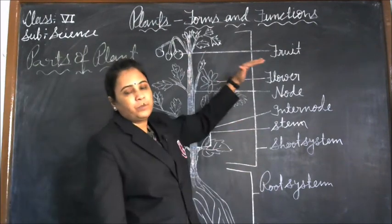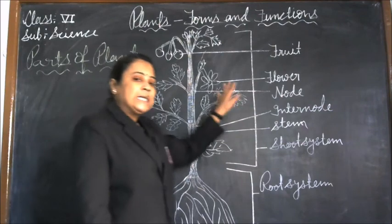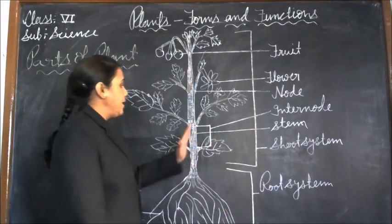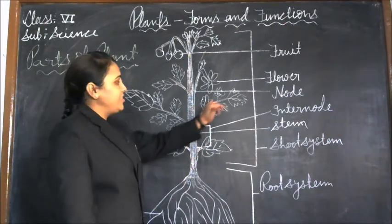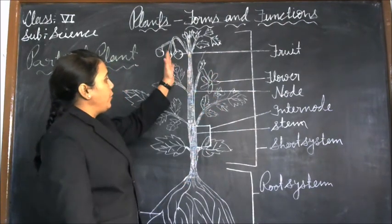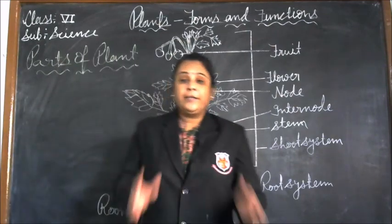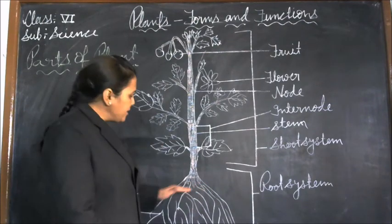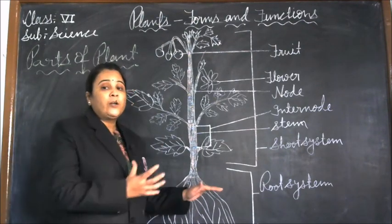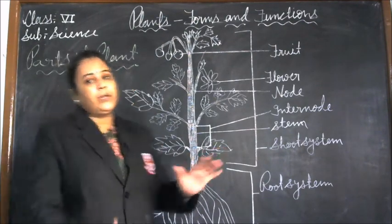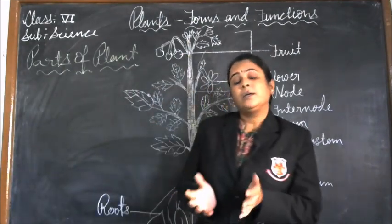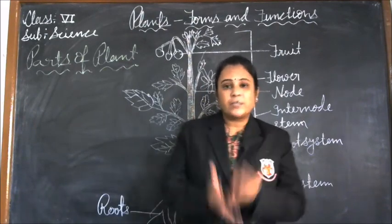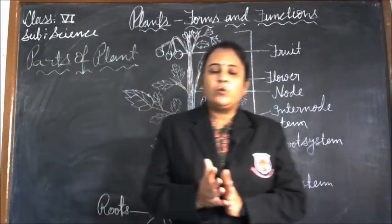Shoot system bears stem, branches, leaves, flower, and fruit. The root system has one main root and several smaller roots that arise from the main root. Before explaining the types of roots and types of stems, we will study the functions of roots and stems.